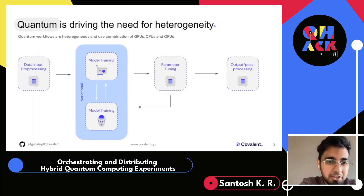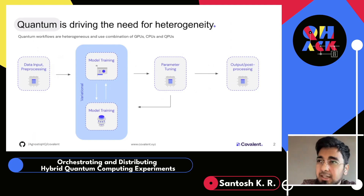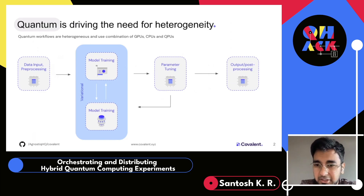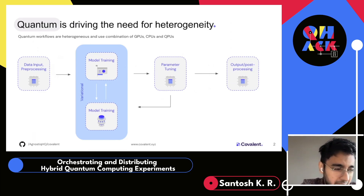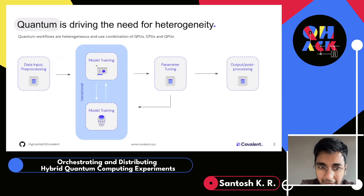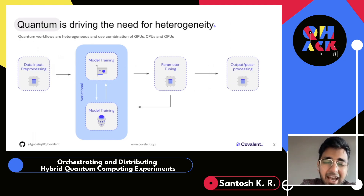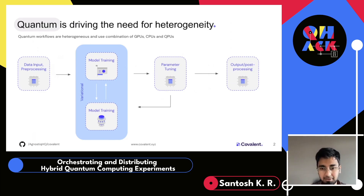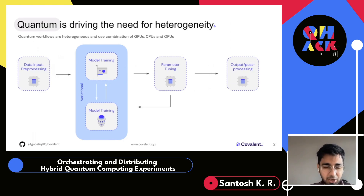A quick introduction to why this tool exists and why there's a need for it. In the current era where quantum is coming in, quantum inherently drives the need for different kinds of workflows and experiments to be very heterogeneous. In this slide you see a typical quantum machine learning workflow you're probably familiar with: you have data you need to pre-process, and a model which has a mixture of CPU and QPU or GPU and QPU that need to train together.